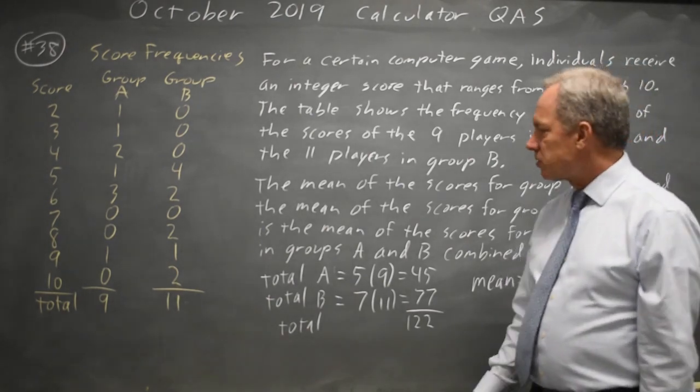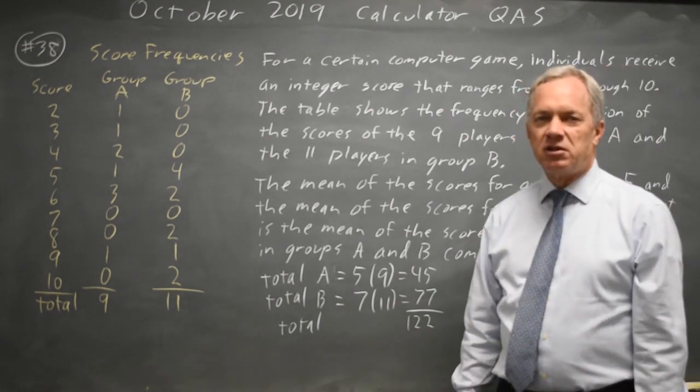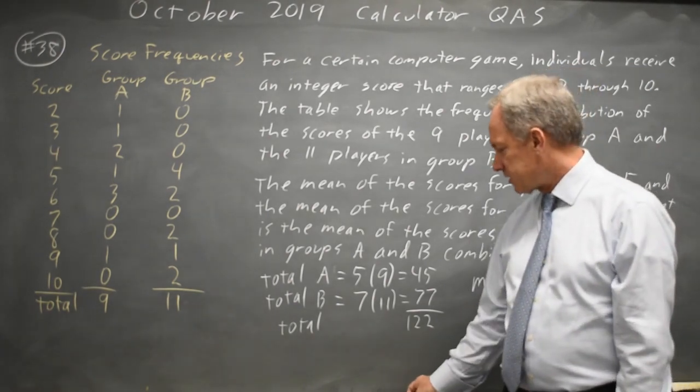If you don't see the shortcut for how to use the means that they give you at five and seven, you can write out all the scores, add them up, and then divide that sum by 20. And that will give you the same answer.